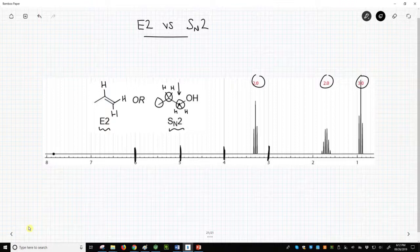Its multiplicity should be 3 for a triplet with a ratio of 1 to 2 to 1. Perfect. We can analyze the other signals in the same manner, and we'd find they match our expectations.